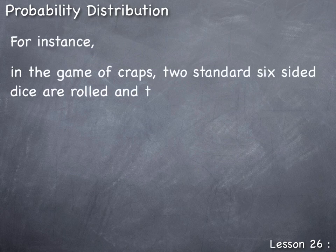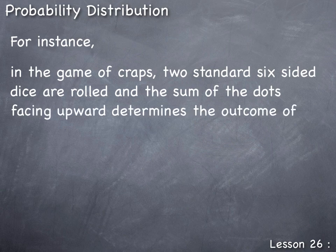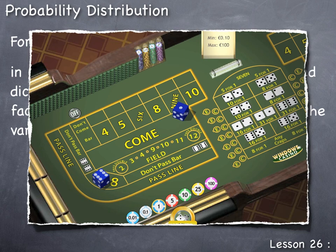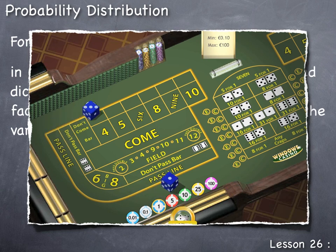For instance, in the game of craps, two standard six-sided dice are rolled and the sum of the dots facing upward determines the outcome of the various bets placed. For example, rolling a 6 and a 1 results in a 7, a 3 and a 1 results in a 4, or a 5 and a 6 results in 11. Depending on the bets placed on the craps table, winning or losing is determined by this random roll of the dice.